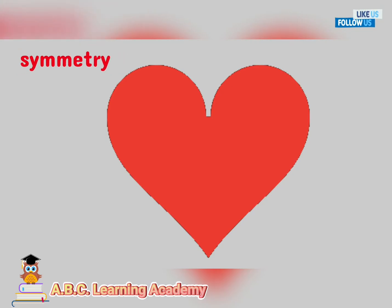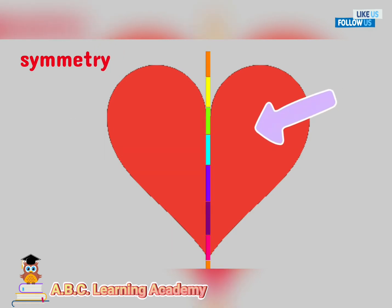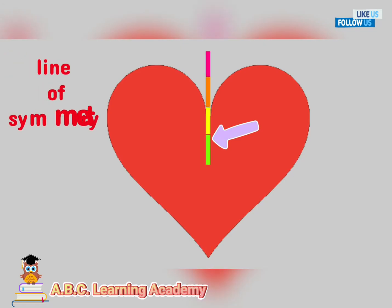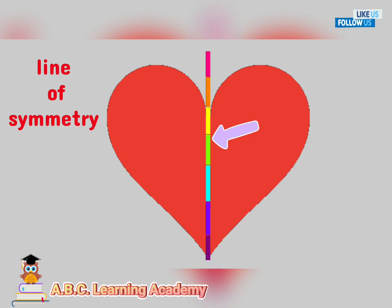Let us study this heart shape. If we're going to fold this vertically, is the left side of this heart shape equal to the right side of it? Yes, they are both equal. Therefore, this is symmetrical. This line is what we call the line of symmetry. It is an imaginary line where you could fold the image and have both halves match exactly.